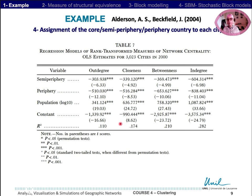Then, they assign the core, semi-periphery, and periphery status to each city in order to test the correspondence between cities' positions and their respective country positions. They did not use classical correlation because network data violates the independence assumption of standard statistics. Instead, they used a test derived from permutation tests, which will be covered in the following courses.